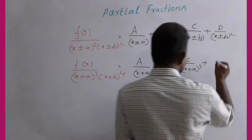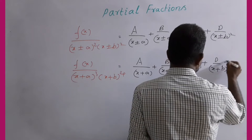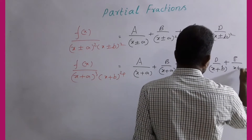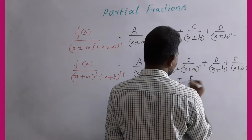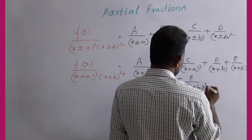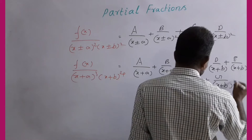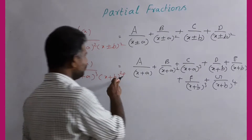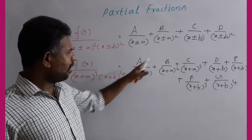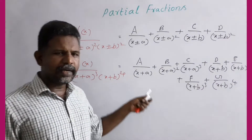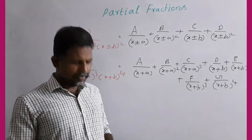Next we have D by (x + b), E by (x + b)², F by (x + b)³, and G by (x + b)⁴. Then after, we are finding the constants A, B, C, D, F, G. This is the partial fractions method.